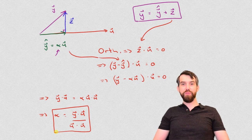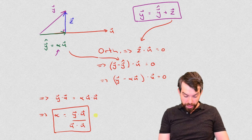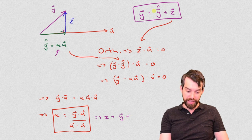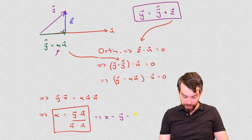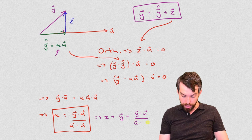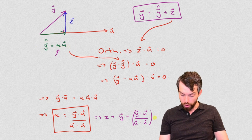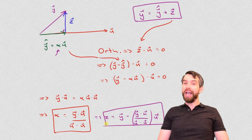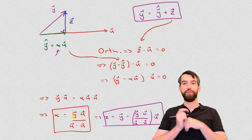Now that we have alpha, we can substitute back to get z. The z vector equals y minus y-hat, and y-hat is alpha·u, so z equals y minus (y·u / u·u)·u. With these two formulas, we can either find y-hat by computing alpha, or substitute back to get z. So I have all the information needed for the orthogonal projection.